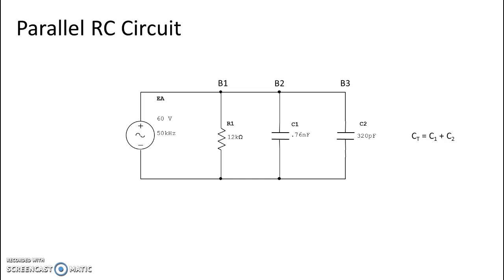Using the formula total capacitance equals C1 plus C2: that's 0.76 nano and 320 pico—I've moved the decimal place and made that 0.32 nano—giving us a combined capacitance, a total capacitance of 1.08 nanofarads.